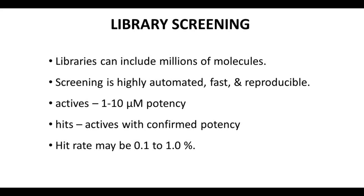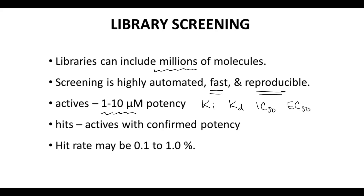Libraries can include millions of molecules. Is it possible to test millions of molecules? Yes, it is. Screening tends to be highly automated — it's robotic — and these screens are fast and reproducible. Typically the potency cutoff for a screen is about 1 to 10 micromolar, in terms of KI, KD, IC50, or EC50. Molecules that hit this threshold are technically called actives. Once you confirm that your actives are real and confirm their potency, then we classify those as hits.